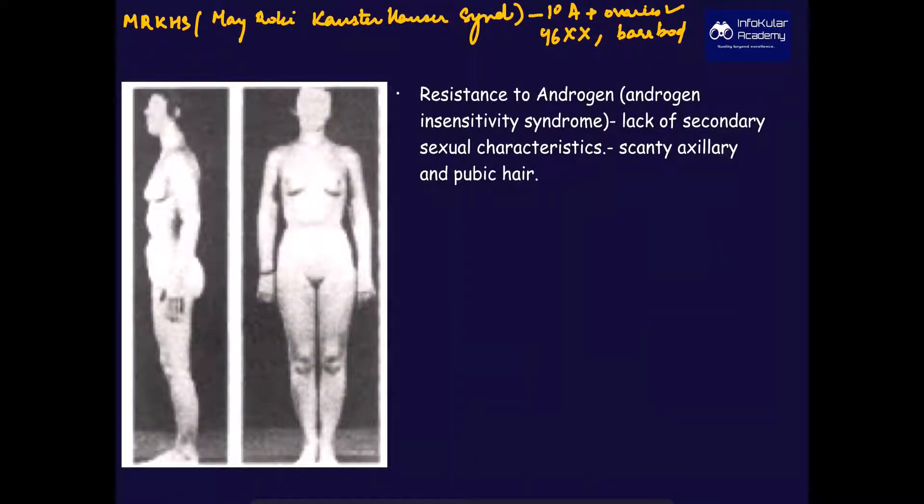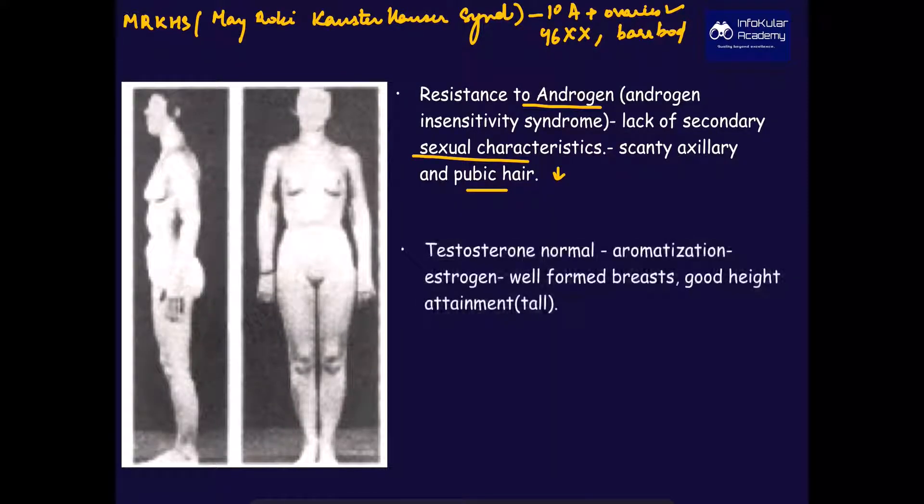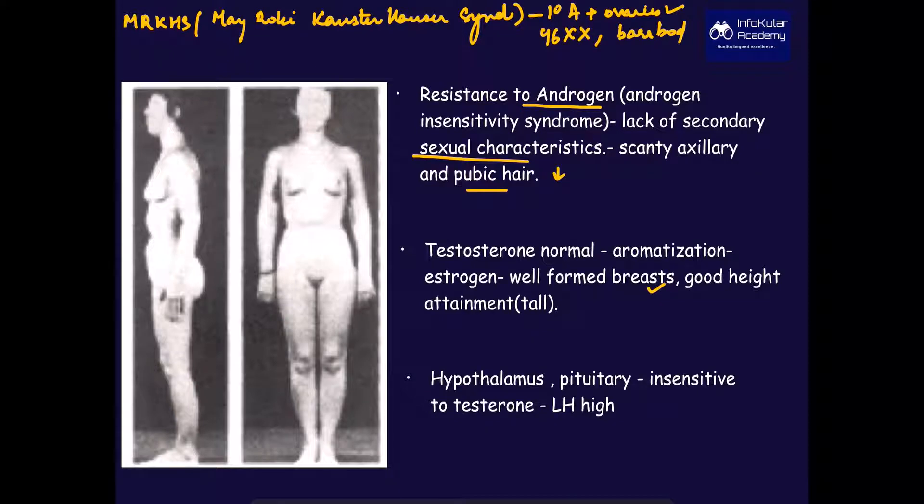It is an important differential diagnosis where primary amenorrhea comes with presence of ovaries and there will be 46,XX and a Barr body. However, in testicular feminizing syndrome, there is resistance to androgen in the body, and hence the sexual characteristics are less and pubic hair is scanty. There will be normal testosterone, but due to aromatization, breast formation will be good.